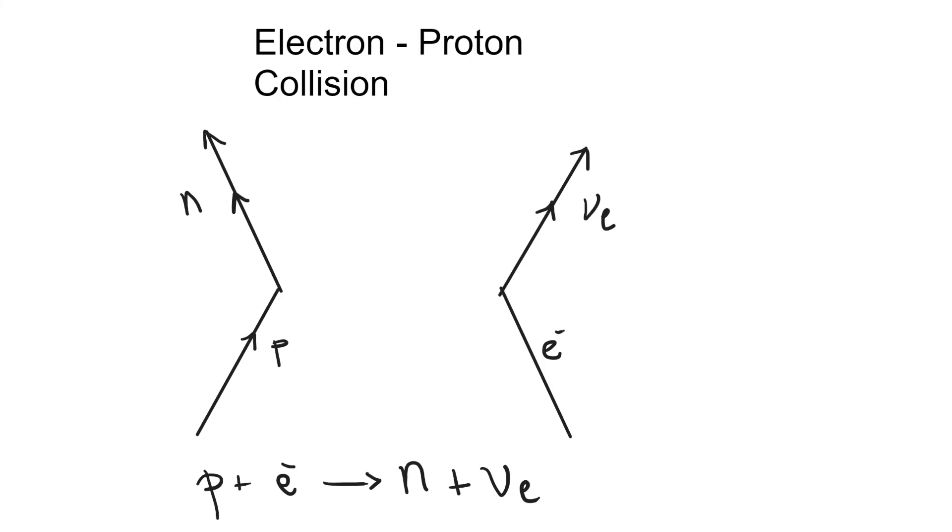The final diagram that we need to know about is electron-proton collision, which looks almost identical. The only difference though is that it's going to be a W minus boson that interacts and that is going the other way. But in both of those cases, we have a proton and an electron going. In the electron-proton collision, we have a W minus here. In the previous one, we had a W plus. And we're left with a neutron and an electron neutrino.